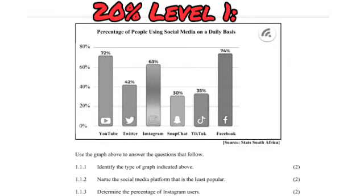These are basic questions based on the graphics you see on your question paper. A good example is a bar graph about social media usage with questions like 'identify the type of graph indicated above.' This is basic information worth 20% of your paper. Just because these are basic questions doesn't mean you should ignore them — you will be surprised at how many people don't know basic things like rounding off.